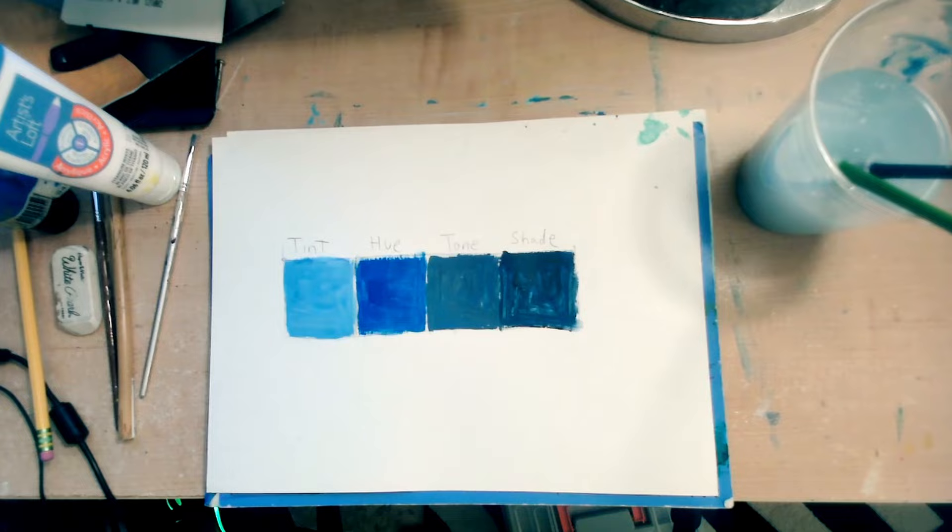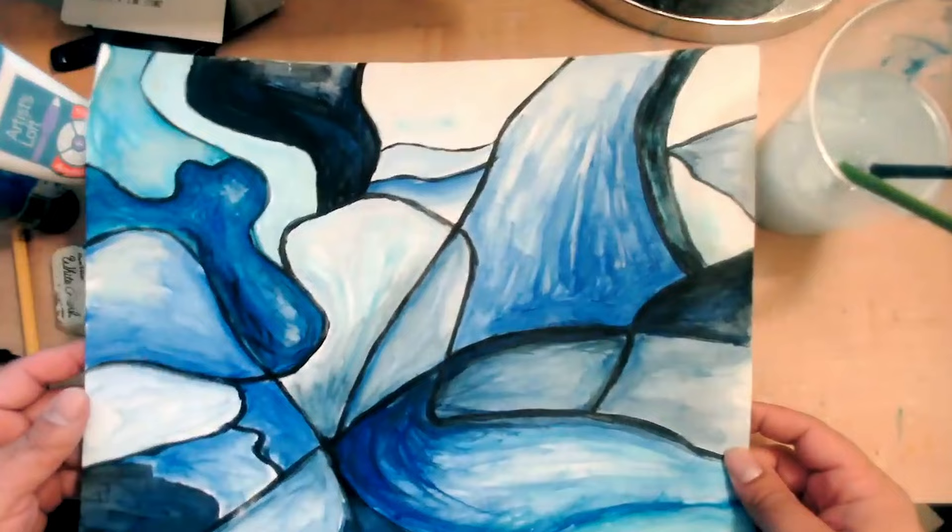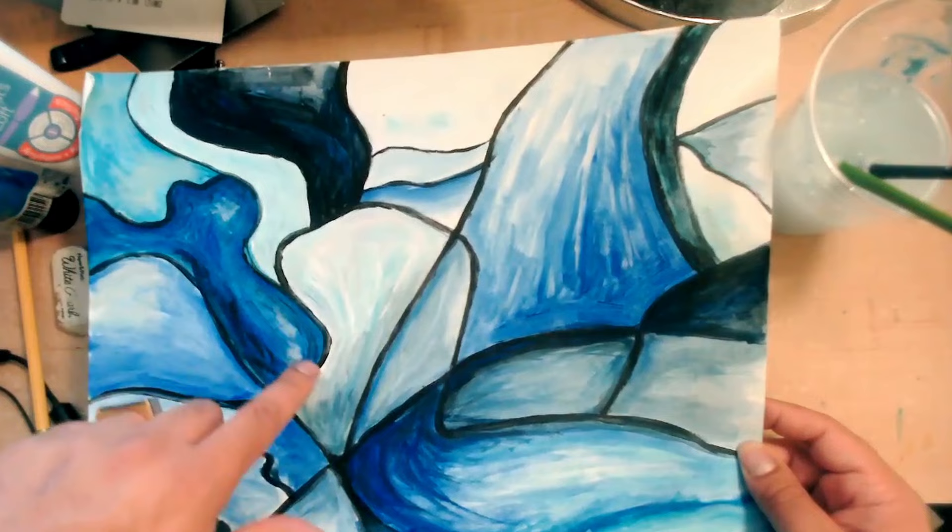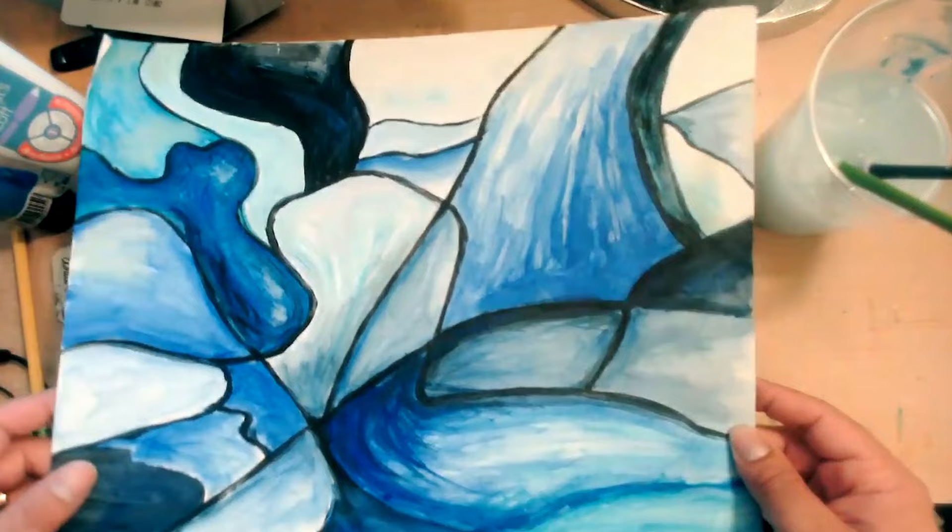Here's some modern artwork that I did with blues. See, I like working with blues. Notice all the shades. We got some tones, we got some tints, and we got some hues of blue. It's all blue. This would be considered monochromatic.